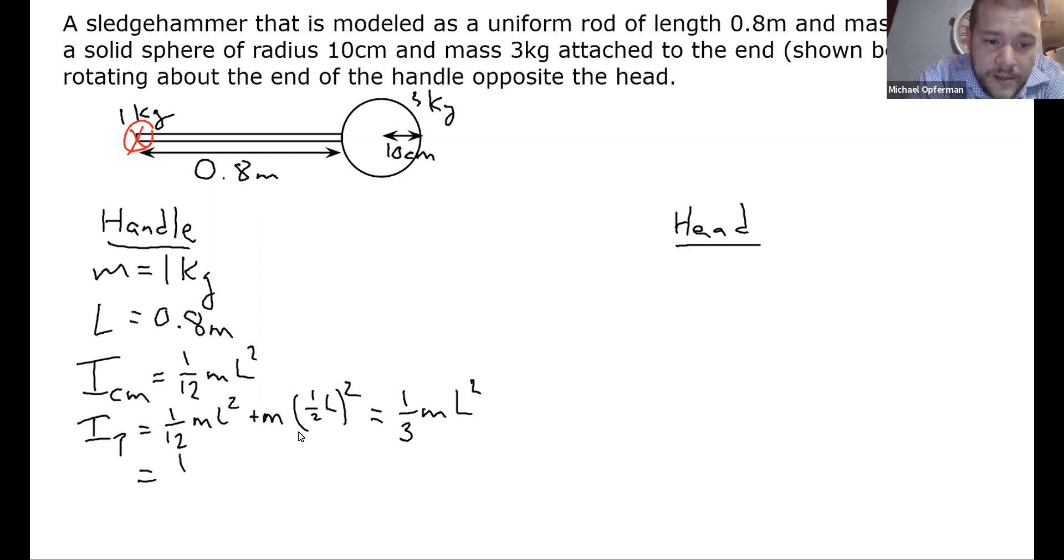So we end up getting one-third times one kilogram times 0.8 meters squared, dropping the units in that equation. And so we get 0.8 squared divided by 3. And that is 0.213. And SI units for moment of inertia are just kilogram times meters squared, no special name.